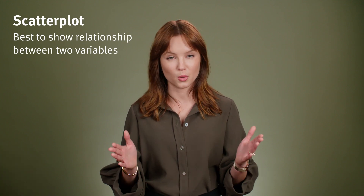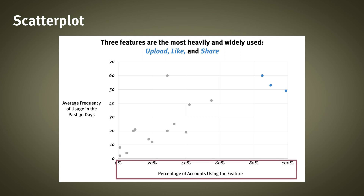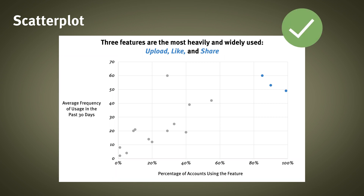Finally, scatter plots. These can work in situations where you want to show the relationship between two variables. Scatter plots look like line charts, but the points are not connected with lines. For example, to show that a few features in an app are used most frequently by the majority of users, we might plot each feature as a dot against the percentage of accounts that use it on the x-axis, and the average number of times the feature is used per user per month on the y-axis. This example might be useful to argue for prioritizing the three most popular features.